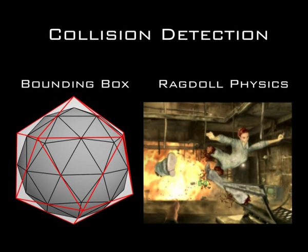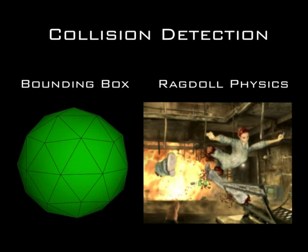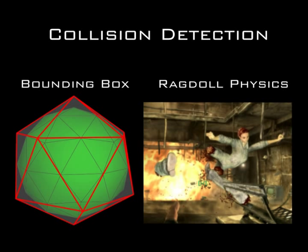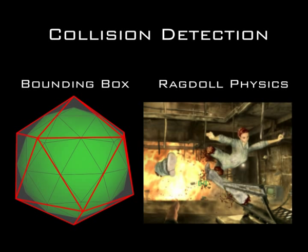Suppose you have a detailed model of a player in-game. An example of a bounding box would be a low-detail version of the player wrapped around the player but invisible. When it collides with something, there is a simpler version to deal with.